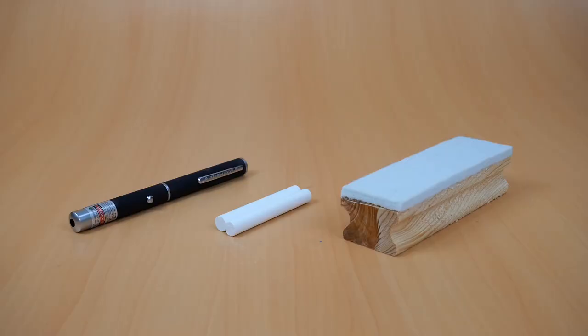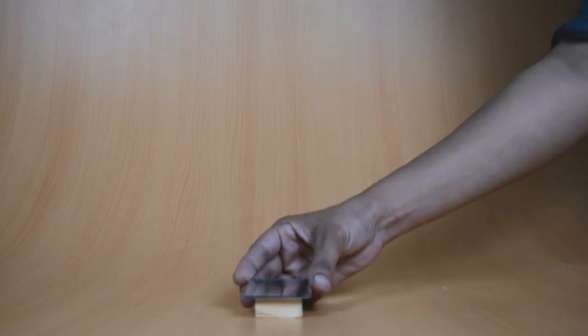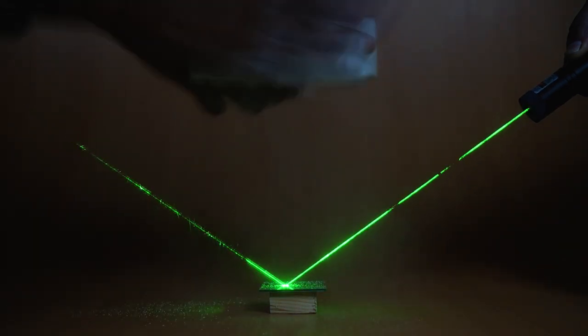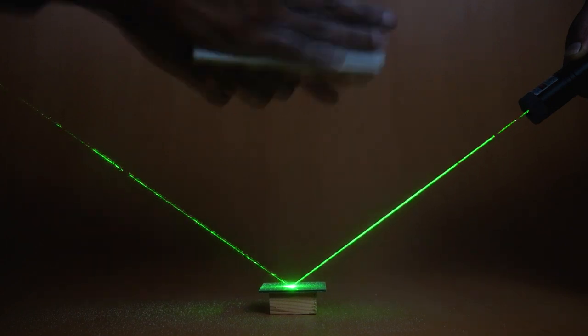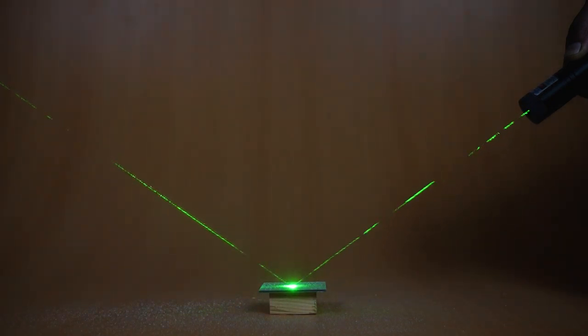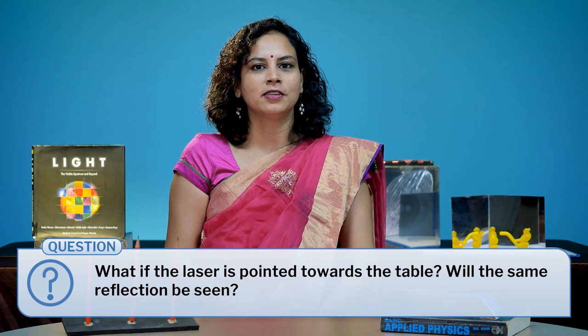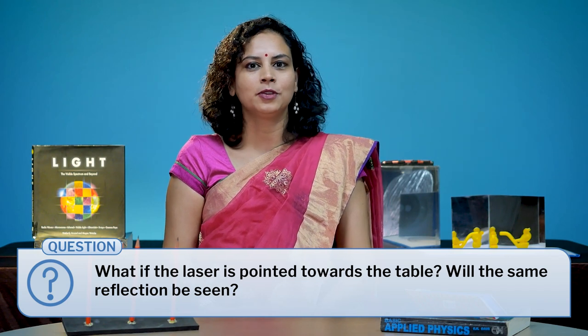Next I asked the students: you have seen reflection of light in the first activity. During class discussions, students wondered if the path of light is rectilinear even after reflection. To answer this question, I demonstrated the next activity. For this, we need a laser and a plane mirror. Place the mirror and pass the laser beam on it — the mirror will reflect the beam. Observe the reflected light beam. With this, we could confirm that reflected light also travels in a straight line. I asked: what if I point the laser towards my table? Will they be able to see the same reflection?